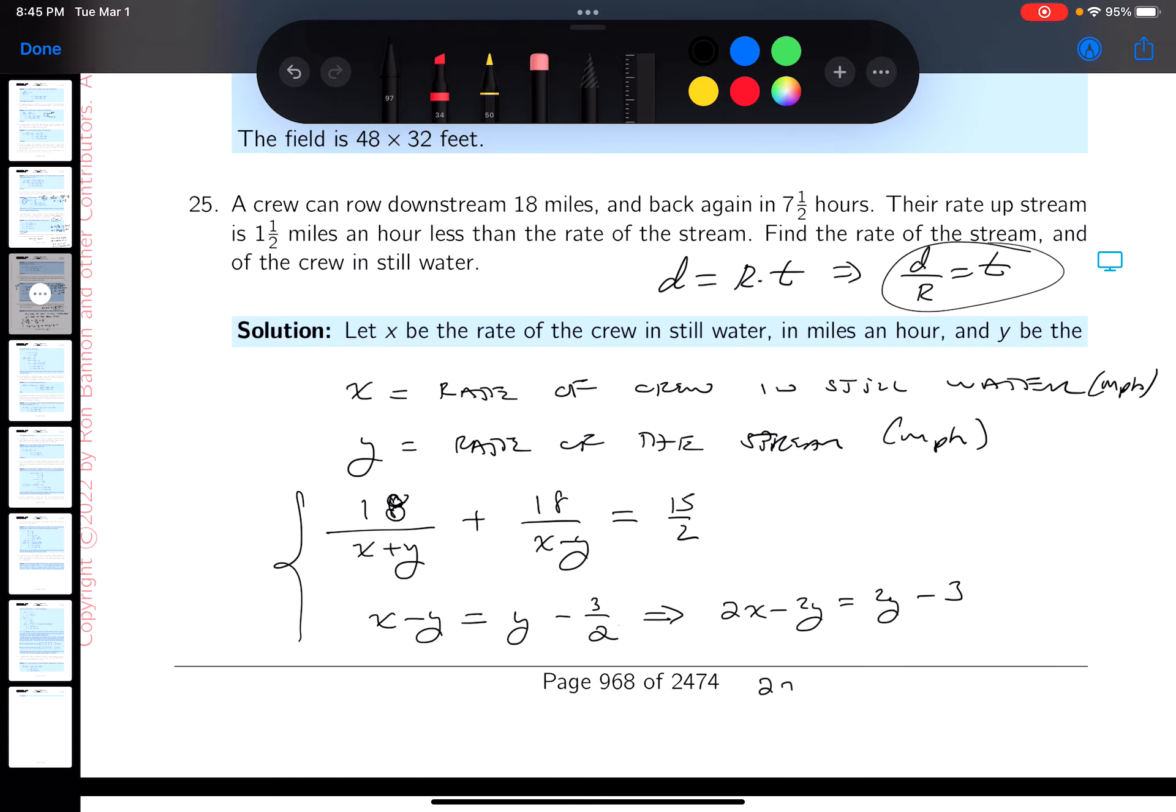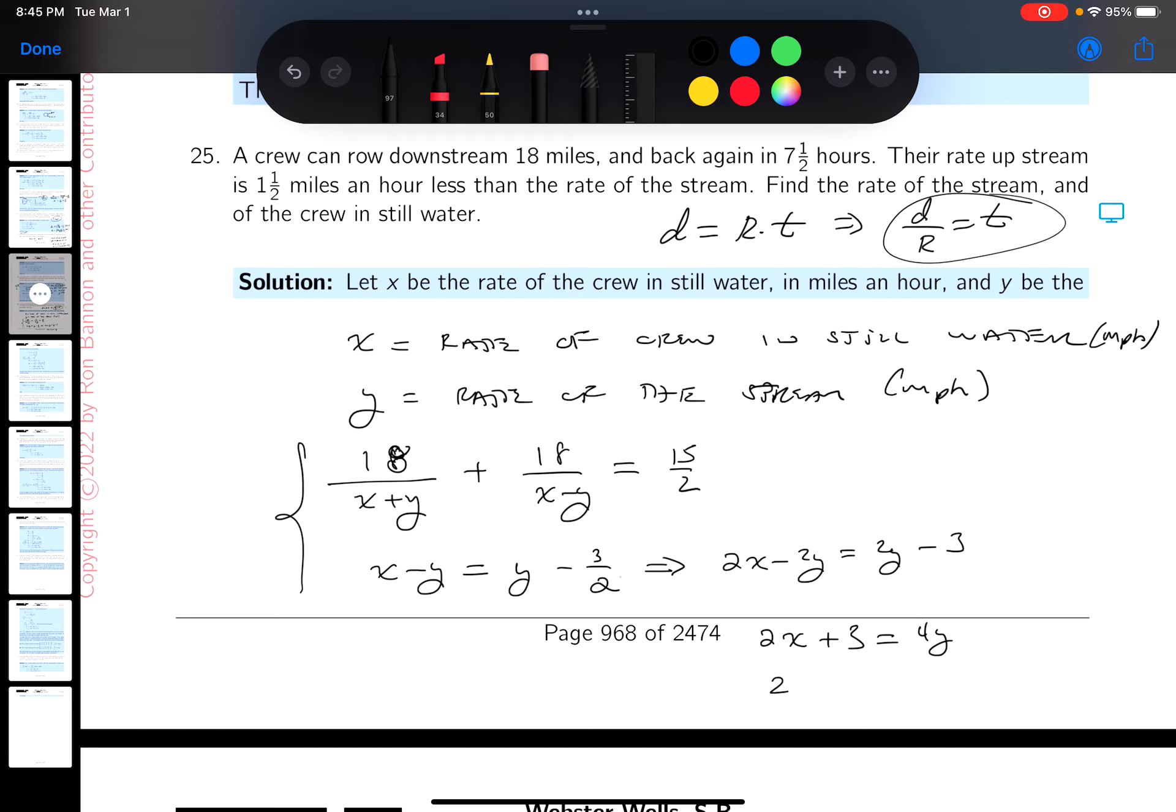So 2X plus 3 equals 4Y, and that would mean 2X plus 3 divided by 4 is equal to Y. And I got to simplify that other equation too.